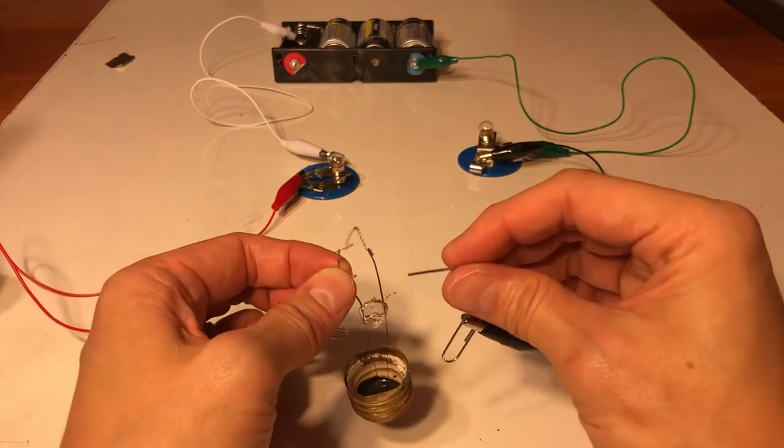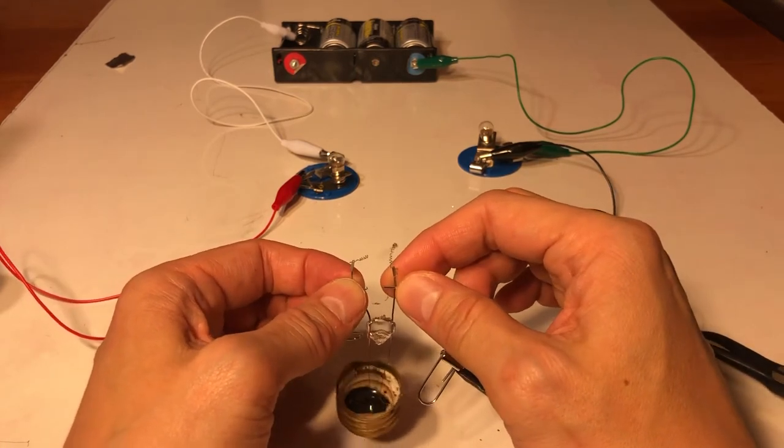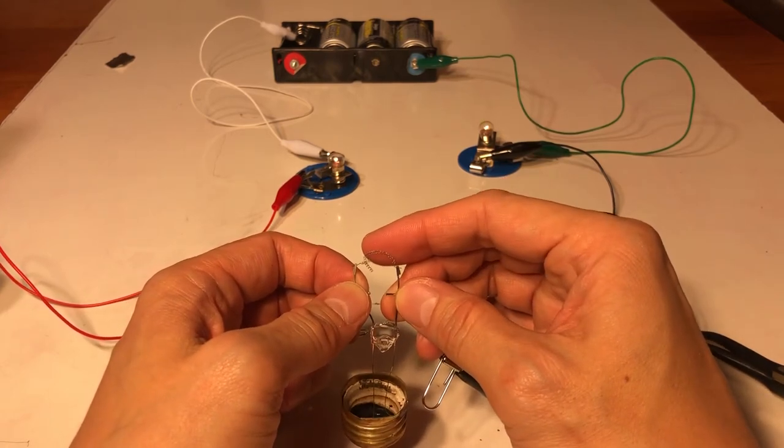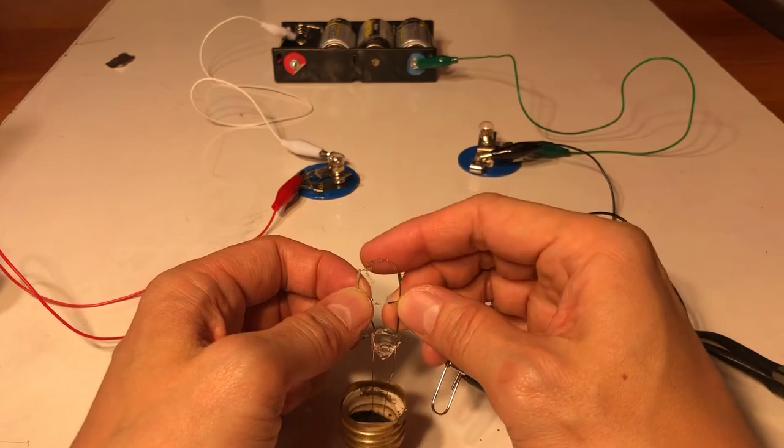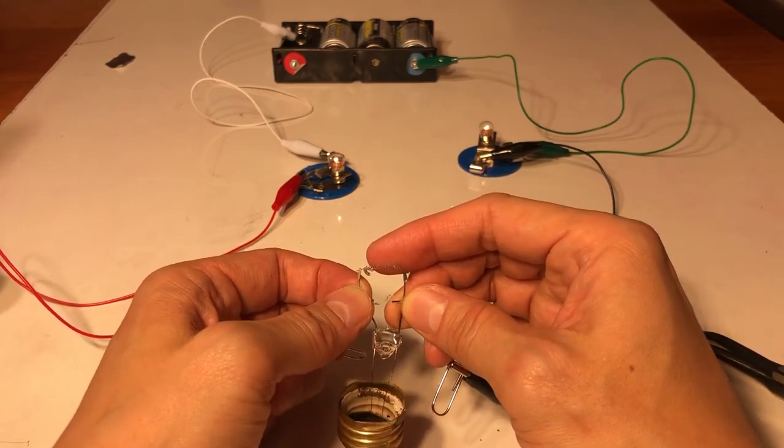So if I put this one, this filament support to this filament support, you'll see they're not connected. Okay, unless, let's see if I can do this, unless I can make that bridge there with the filament. See that? When the filament is whole, they are connected.